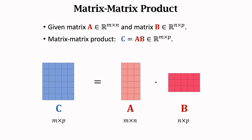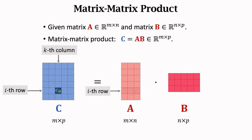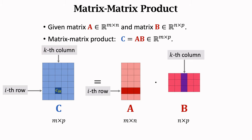I'm going to show how to compute an element of C. Let's study the element C sub ik, which is in the i-th row and k-th column. The i-th row of matrix A is a 1 by n vector. The k-th column of matrix B is an n by 1 vector. The inner product of these two vectors is the element C sub ik. To obtain C sub ik, we write a for loop to compute the inner product of two vectors. Since C sub ik is only one element of matrix C, and the number of elements is m times p, to compute all elements we need nested for loops.